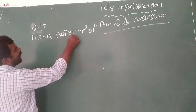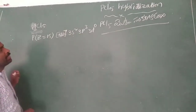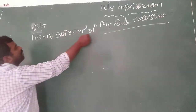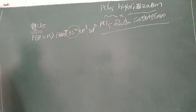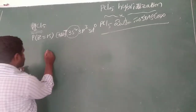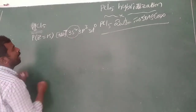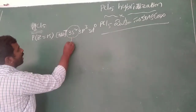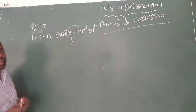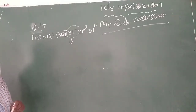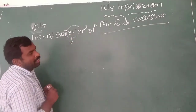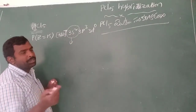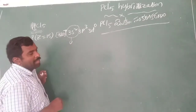But in the excited state, this phosphorus will absorb energy. One electron from the 3s orbital will be excited and transferred to the 3d orbital. So one electron jumps to the 3d orbital.